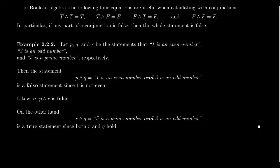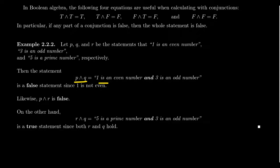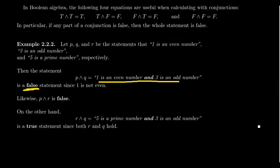Pivoting back to our statements: P stands for 'one is an even number', Q stands for 'three is an odd number', and R stands for 'five is a prime number'. The statement P and Q means 'one is an even number and three is an odd number'. This is a false statement because it's a conjunction — ands are only true if both simple statements are true. But P is false: one is not an even number. Q is true: three is an odd number. So we have false and true, which makes the and statement false.